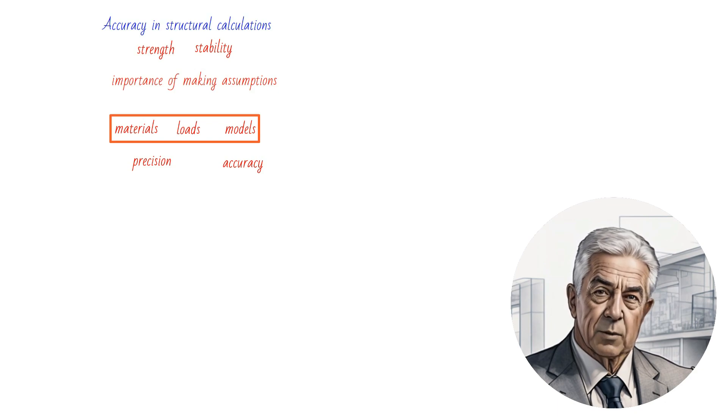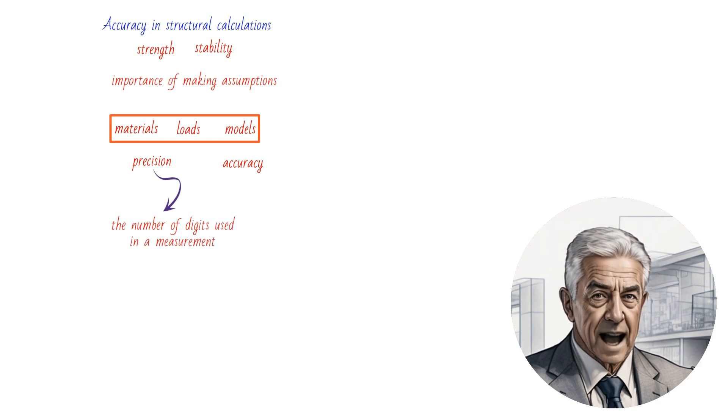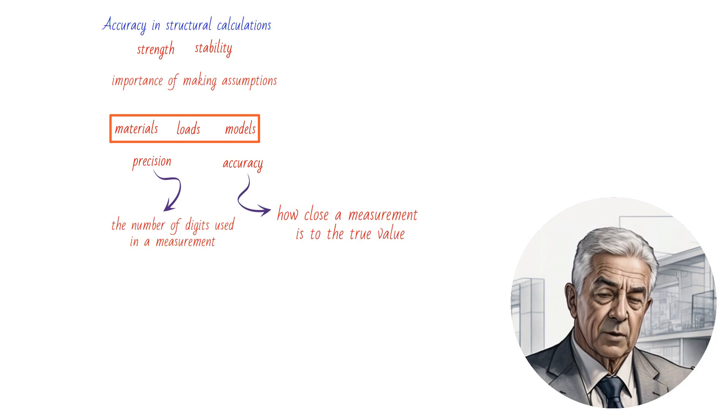It is important to note that precision refers to the number of digits used in a measurement, while accuracy refers to how close a measurement is to the true value.